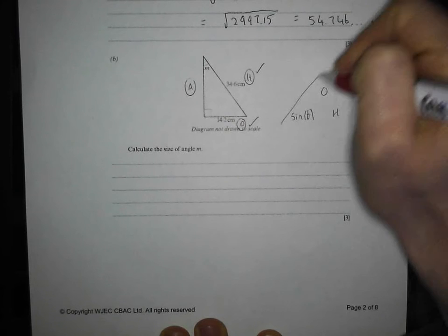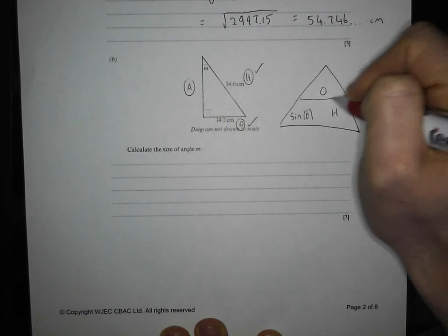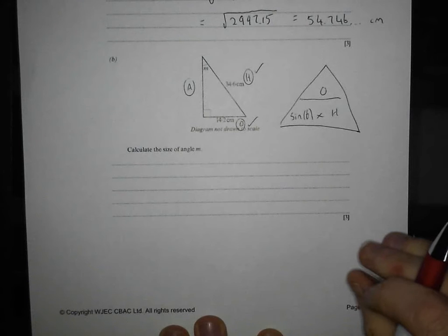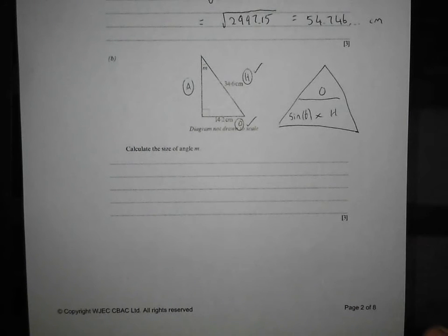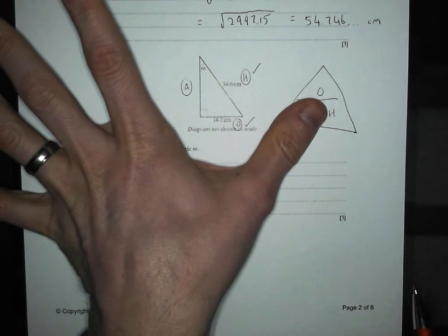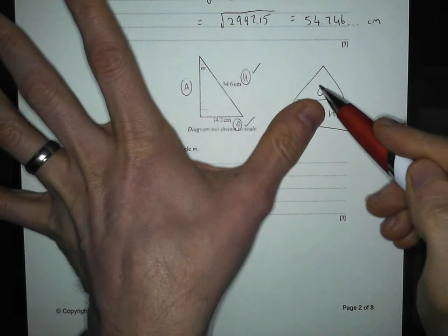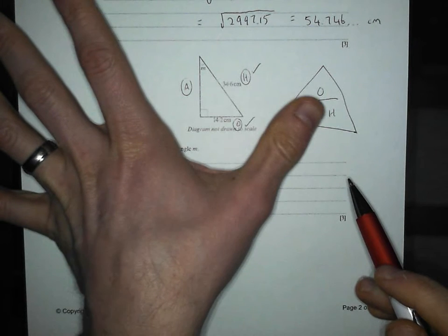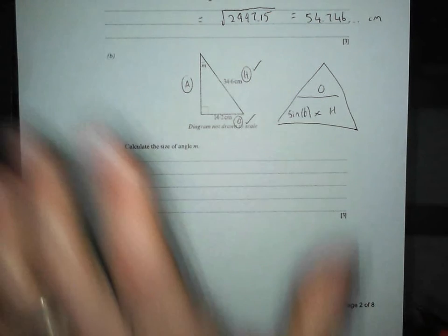So sine equals opposite over hypotenuse. Lovely little triangle round there. Times in the middle. And my rule is, I'm going to cover up what I am trying to work out. Well they've asked me to work out the angle. So I'll put my thumb over and it tells me that I need to do opposite divided by hypotenuse. It tells me sin theta equals opposite divided by hypotenuse.